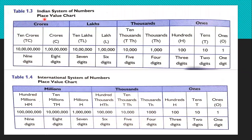We will start the revision with the place value chart. We are going to discuss about both the Indian system and the international system. First, we will discuss about the Indian system. In the Indian system, the chart is divided into different periods like ones period, thousands period, lakhs period, crores period, and so on. The ones period comprises three digits: ones, tens, and hundreds. The thousands period consists of thousands and ten thousands. The lakhs period comprises lakhs and ten lakhs.